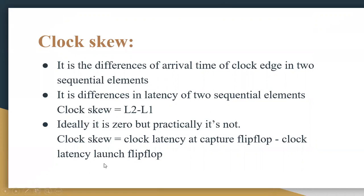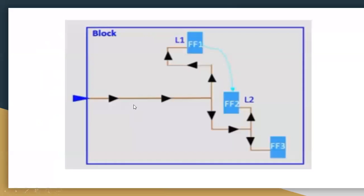Ideally clock skew is zero, but practically it is not. In detail, clock skew is nothing but the clock latency at the capture flip-flop minus the clock latency at the launch flip-flop. FF1 is the launch flip-flop with latency L1, and FF2 is the capture flip-flop with latency L2.